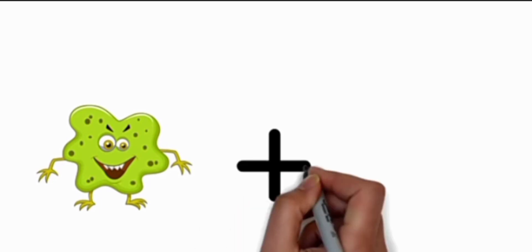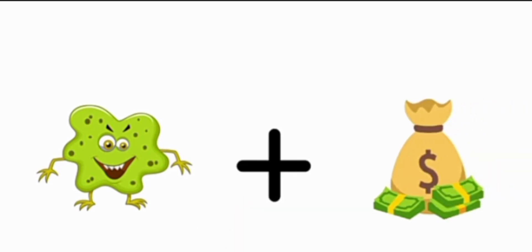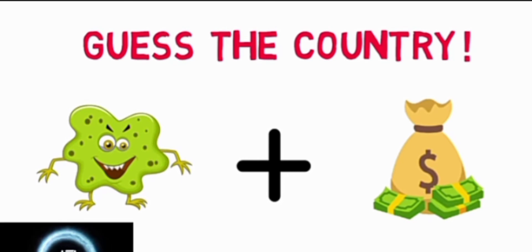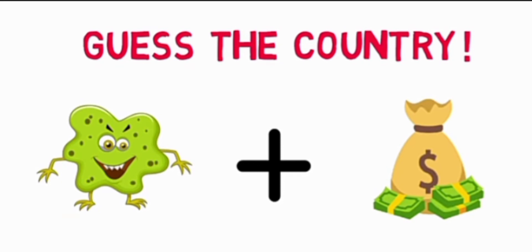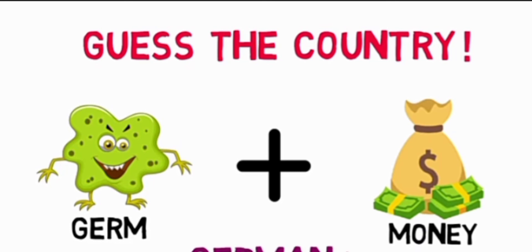Number nine is a jump plus money. This is also very easy. Countdown has begun, keep guessing. A jump plus money, so this is Germany.